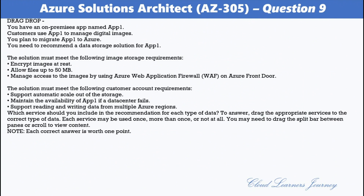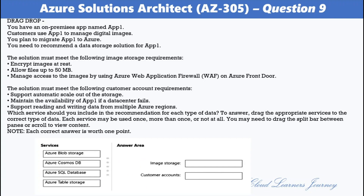Question number 9. You have an on-premises app named App1 that customers use to manage digital images. You plan to migrate App1 to Azure. The image storage requirements are: encrypt images at rest; allow files up to 50 MB; and manage access using Azure Web Application Firewall on Azure Front Door. The customer account requirements are: support automatic scale-out of storage; maintain availability if a data center fails; and support reading and writing data from multiple Azure regions. For image storage: Azure Blob Storage. For customer accounts: Azure Cosmos DB.